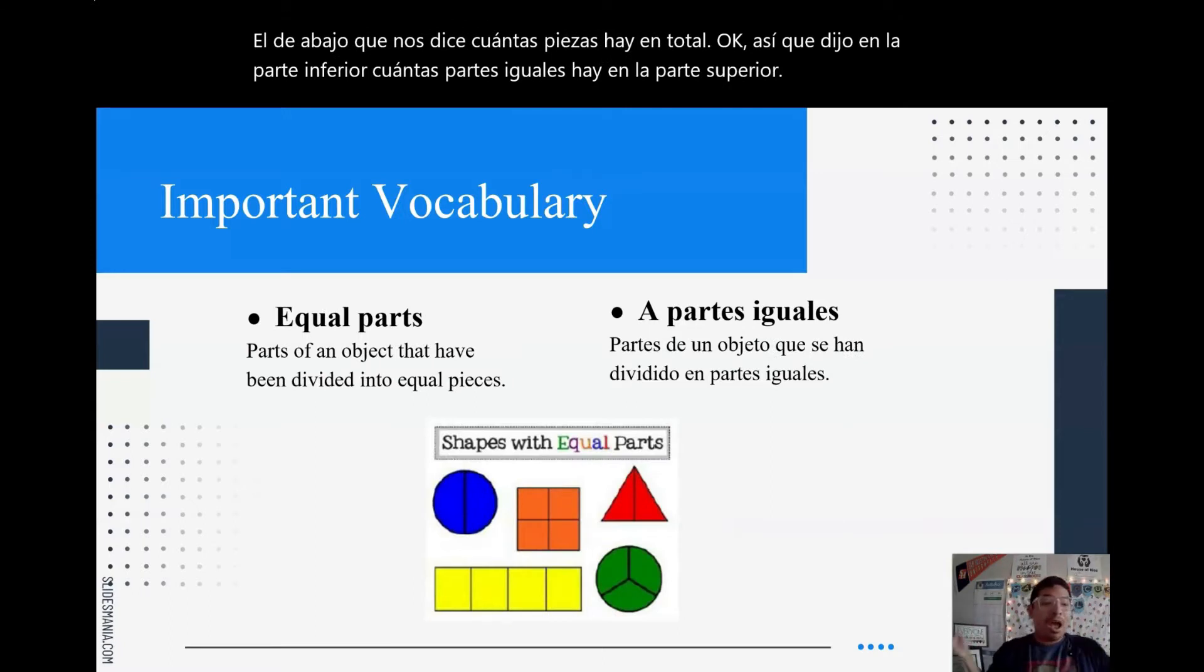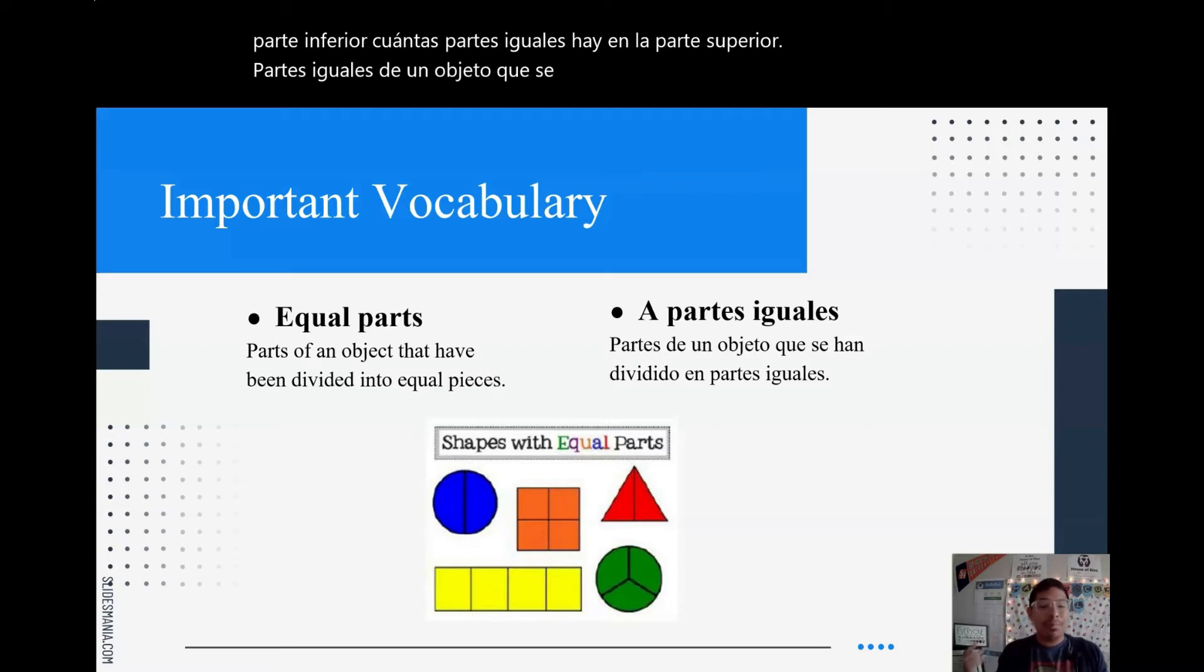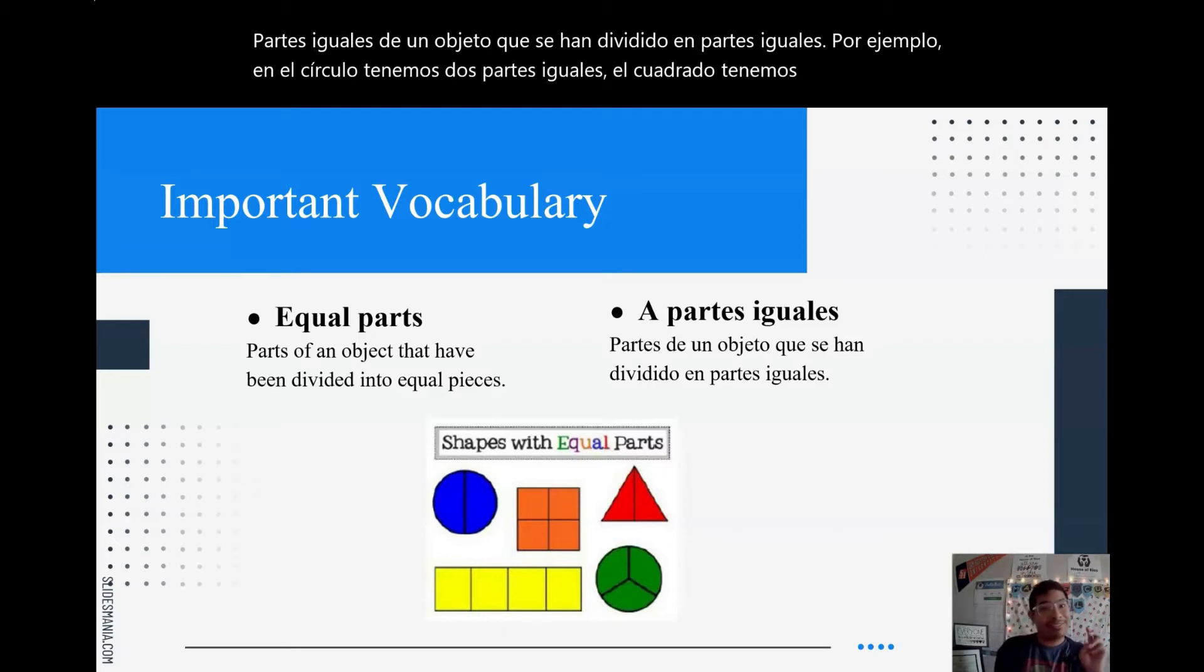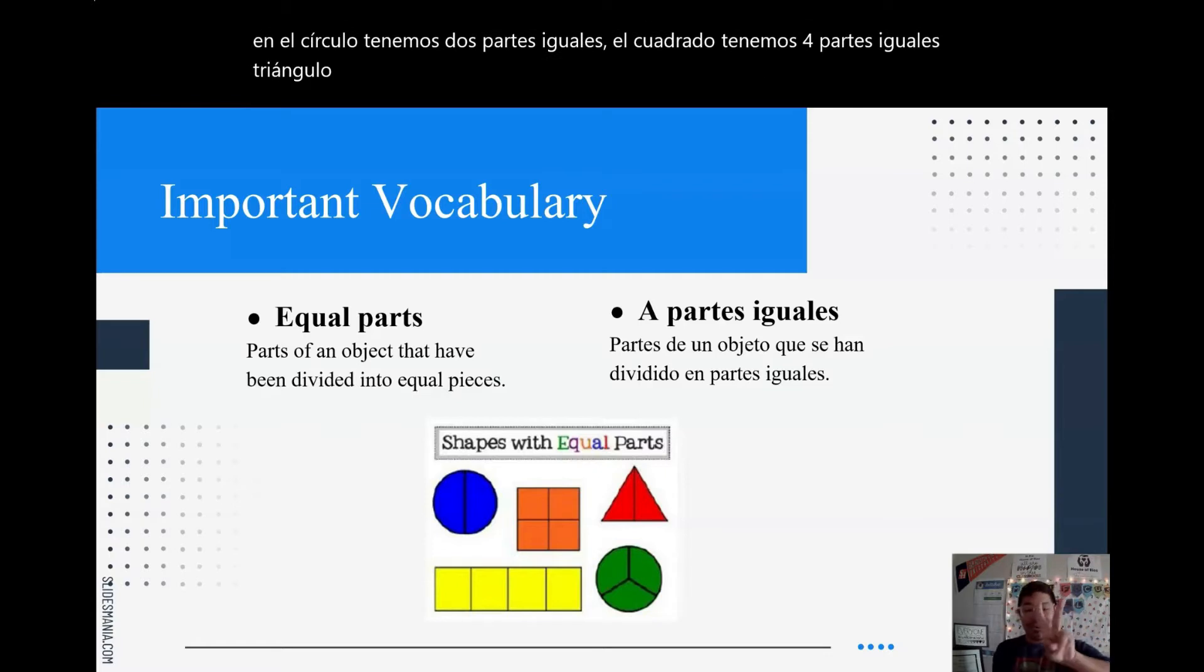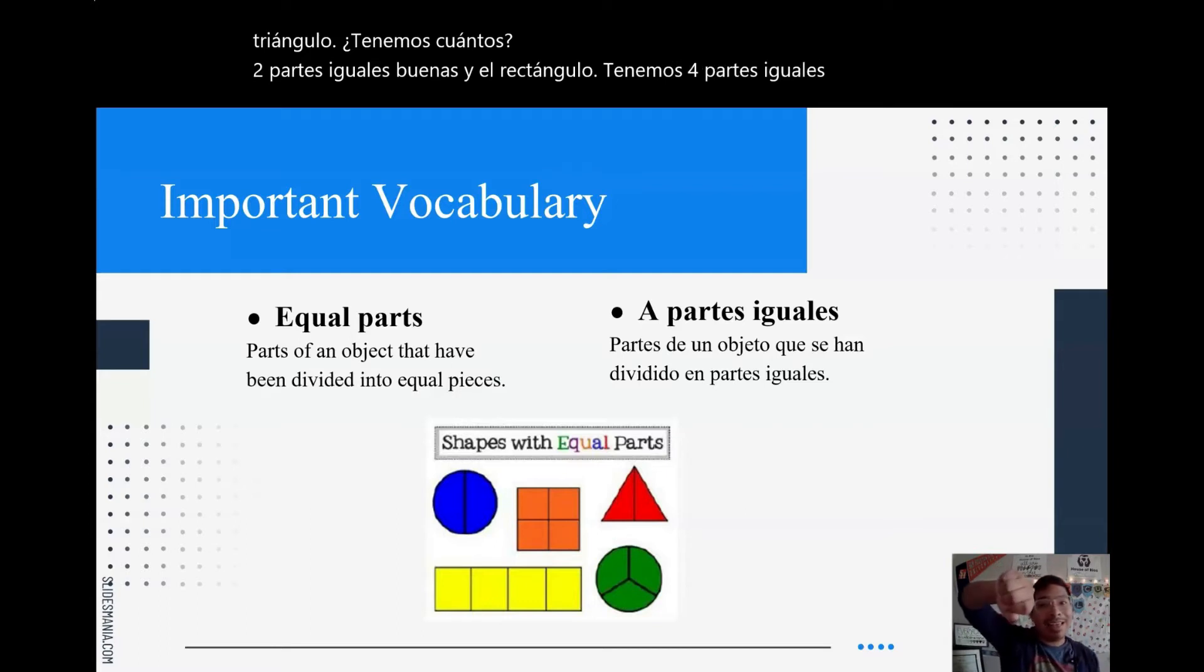Equal parts. Parts of an object that have been divided into equal pieces. For an example, in a circle, we have two equal parts. The square, we have four equal parts. Triangle, we have how many? Two equal parts. Good. And the rectangle, we have four equal parts. And the last circle, we have three equal parts. Good.